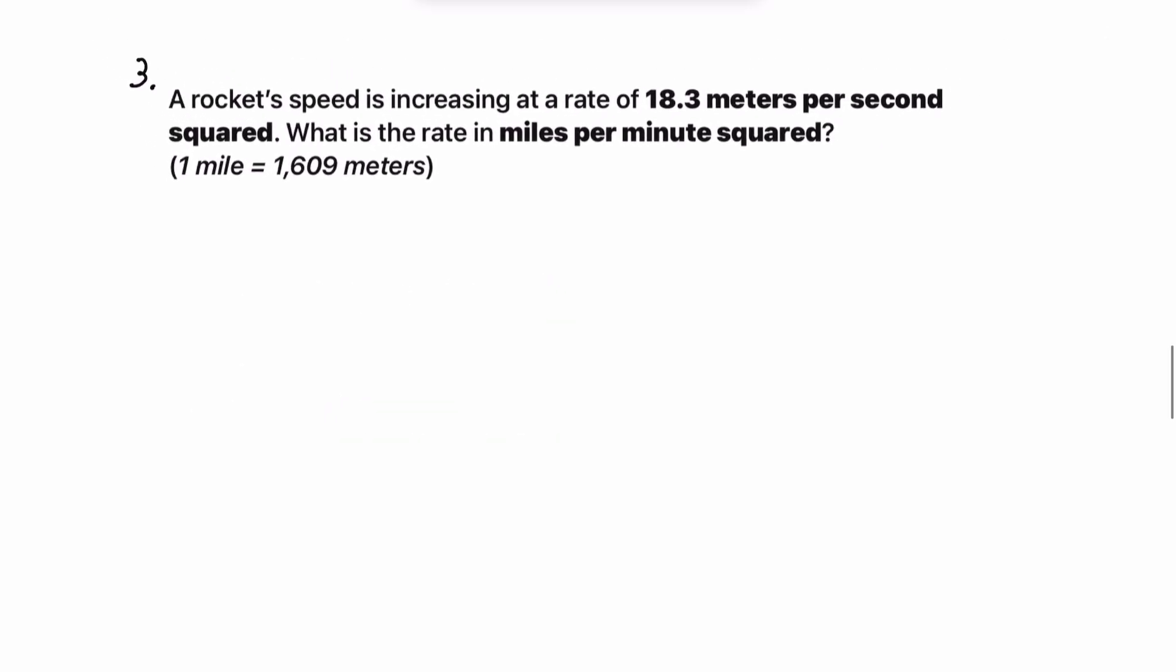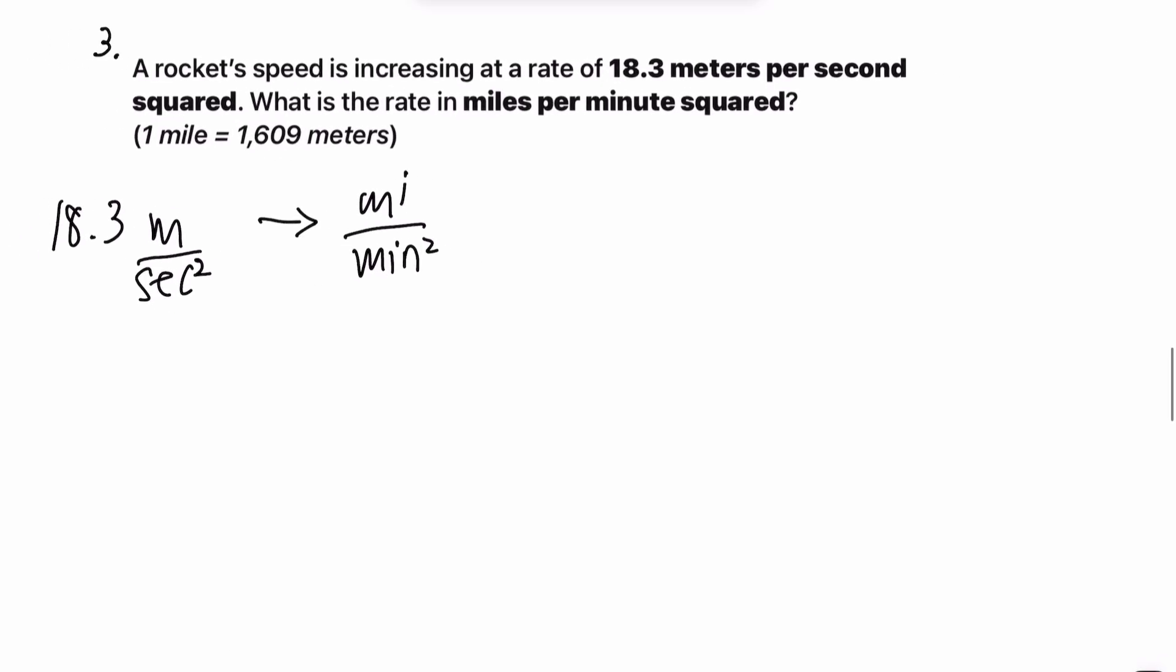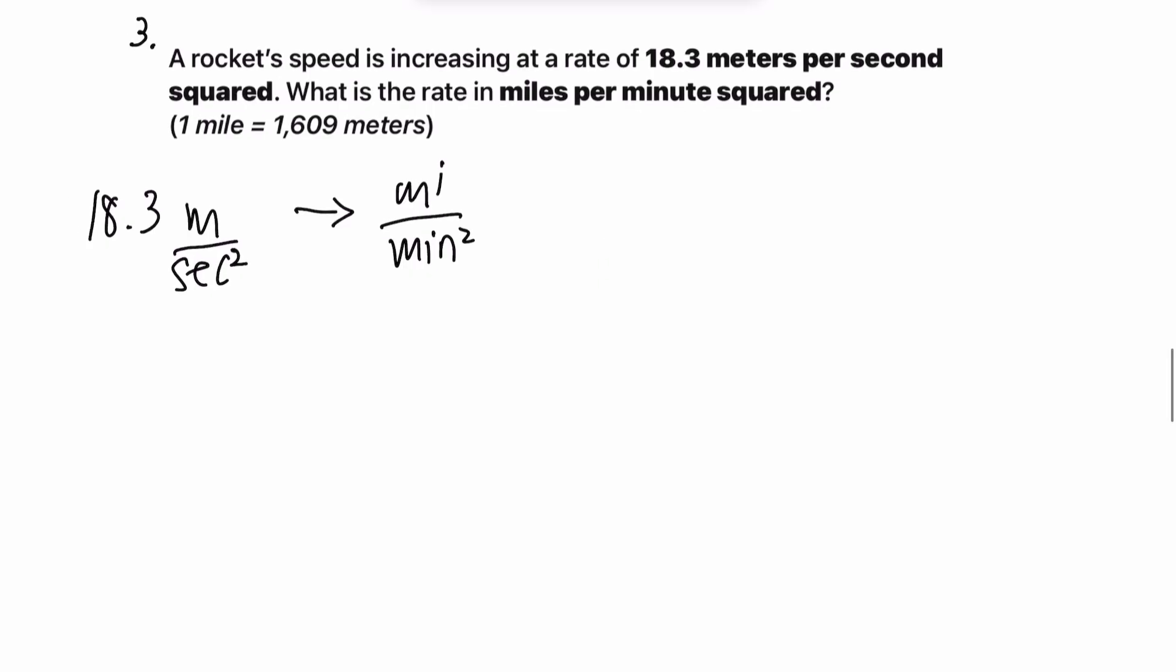Number three. A rocket speed is increasing at a rate of 18.3 meters per second squared. What is the rate in miles per minute squared? Okay. Hopefully you noticed that this SAT question is trying to trick you by giving you very similar units. Or at least the symbols for these units are very similar, right? Three of them have M's. Two of them have M's.